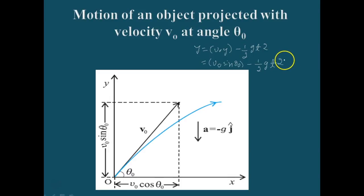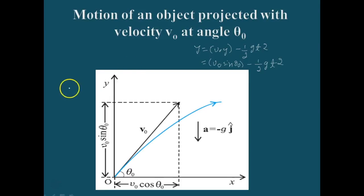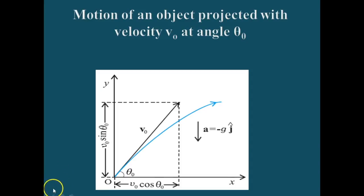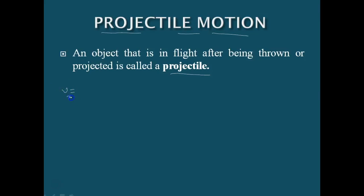The components of velocity at time t can be obtained by considering the kinematic equations: Vx = V0x + Ax · t and Vy = V0y + Ay · t.